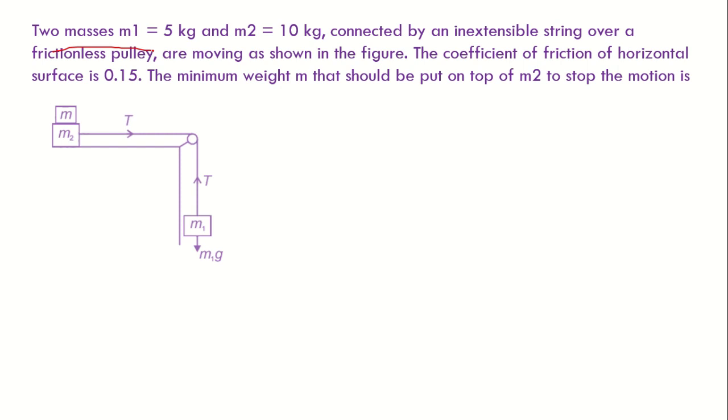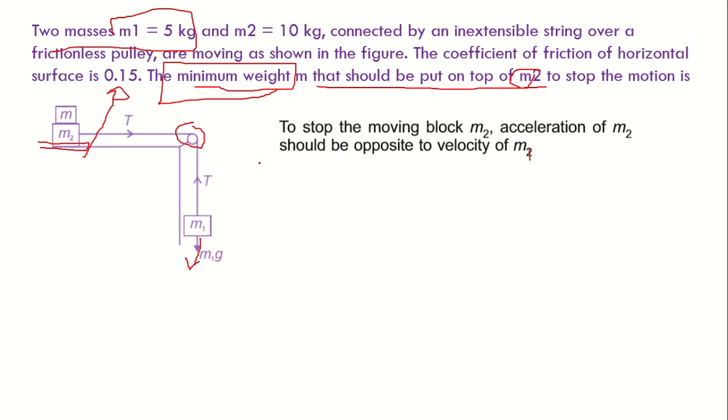In this question, there are two masses M1 and M2 which are passing over an inextensible string, and the coefficient of friction between the horizontal surface is given, which equals 0.15. We have to find minimum weight that should be kept upon the mass 2 to stop this M1 from moving. To make this possible, M2 should be greater than M1, but it is less than M1, so we have to add an additional weight on this one.